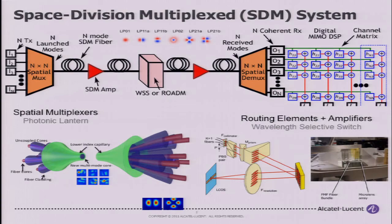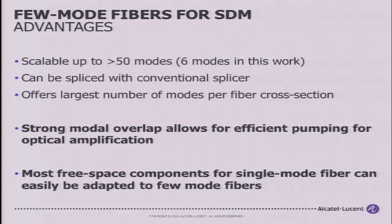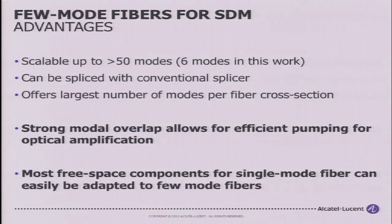So why are we interested in few-mode fibers? First, they're very easy to work with in the lab and look almost like a single-mode fiber. By increasing the core diameter, you can easily scale the number of modes — a conventional multi-mode fiber might have 50-plus modes, giving you a 50 times increase in capacity. You can use a normal splicer, and there's the largest number of modes per cross-sectional area. You can also use one pump to amplify all the modes, and most free-space components such as wavelength switches or couplers can be easily adapted to few-mode fibers.